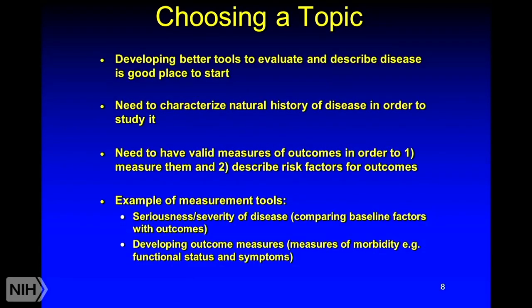Developing better tools to evaluate and describe a disease is often a good place to start. Another step is to characterize the natural history of the disease — if people don't know what a disease does to human beings, it's very difficult to look at how to treat it. Also consider whether there are valid measures to assess outcomes — some are easy, like whether a person is alive or dead, while others require elaborate development, such as patient-reported outcomes. Finally, you might want to describe risk factors for certain outcomes: who is more likely to die, live, or have complications based on patient characteristics.